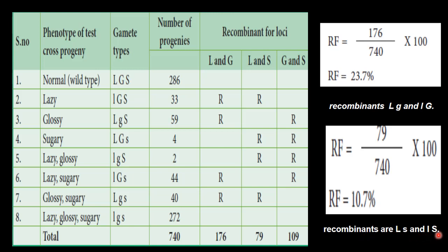So recombinants are L and S and small L and capital S. This L and this S is dominant. 10.7 percent is less than 50. So this also shows it is also linked. So this is the highest frequency. Here it is the lowest frequency. Now L and G are the far away alleles. L and G are the far away alleles in a chromosome.